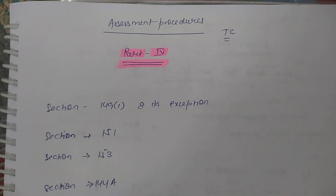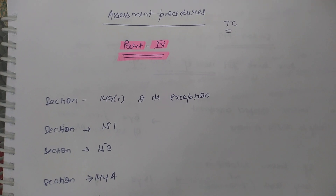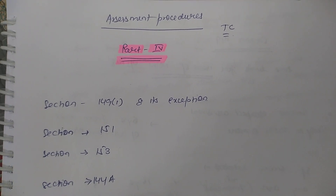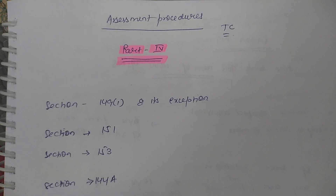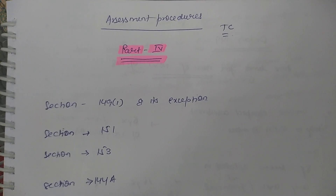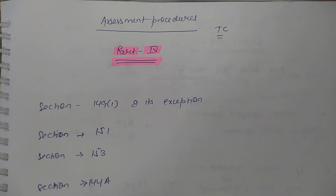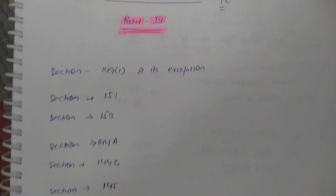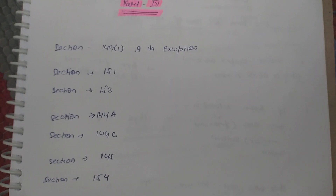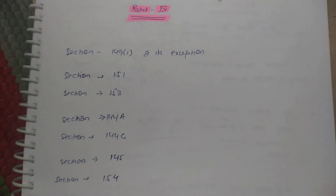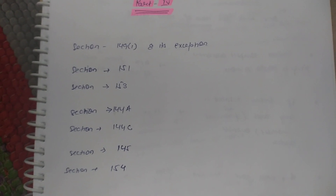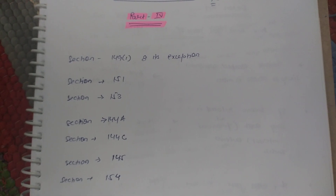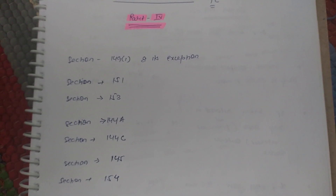Hello friends, welcome to yet another session on assessment procedure. In our last session we discussed Section 147, that is assessment or reassessment in case of income escaping. That section is very important and I strongly recommend you go through that video. In today's session we will talk about Sections 149 and its exceptions, 151, 153, 144A, 144C, 145, and 154, which will complete this chapter on assessment procedures.